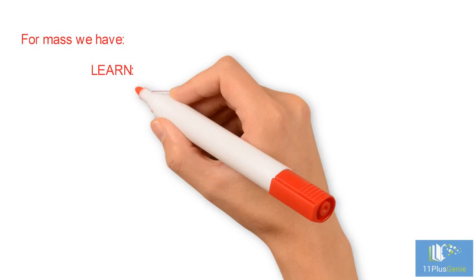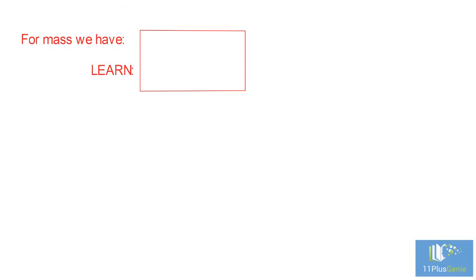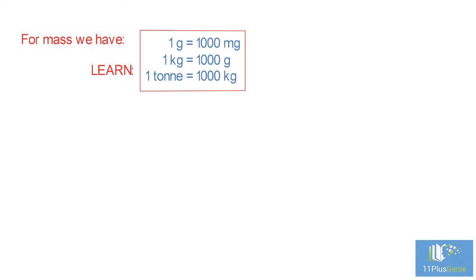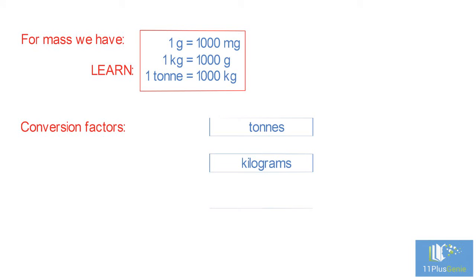For mass, we have: one gram equals 1000 milligrams, one kilogram equals 1000 grams, one ton equals 1000 kilograms. You can use the following diagram to convert between these units.